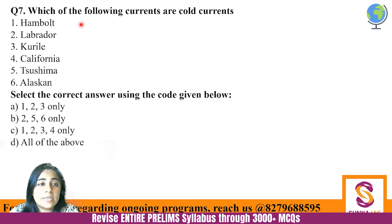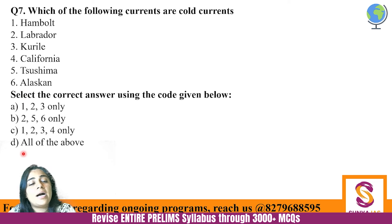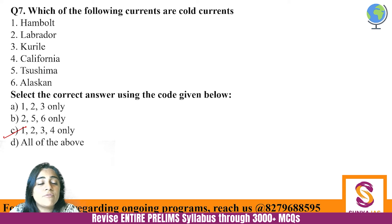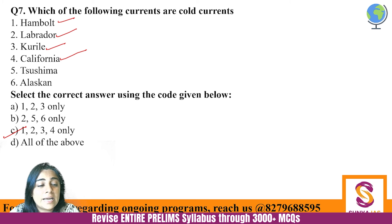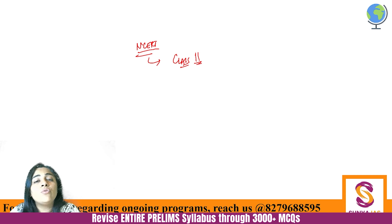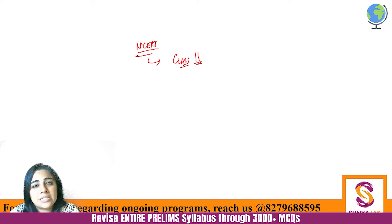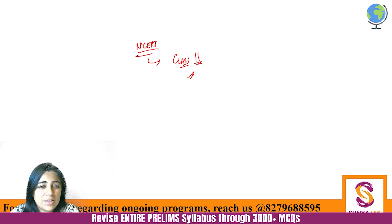Which of the following are cold currents: Humboldt, Labrador, Kuril, California, Tsushima, and Alaskan? The answer is one, two, three, and four — Humboldt, Labrador, Kuril, and California currents are cold currents. Since these are revision classes, please go to your NCERT Class 11 Indian Physical Geography textbook, find the ocean water movements chapter, and study the diagram with all relevant ocean currents to memorize them thoroughly.